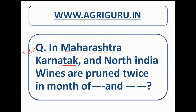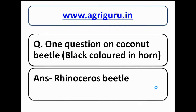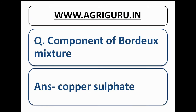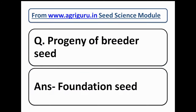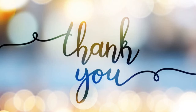Question number 53: in Maharashtra, Karnataka, and North India, vines are pruned twice in certain months — we don't have the full question or correct options; comment below if you know. Question number 54 is about the coconut beetle with a black horn — the answer is the rhinoceros beetle. Question number 55: a component of Bordeaux mixture — the answer is copper sulphate. Question number 56: a poultry house with 14 cm x 16 cm spaced restricted boxes where birds can stand and sit comfortably is known as the battery method. Question number 58: the progeny of breeder seed is foundation seed. The last two questions are from the definitions of aquaponics and protoplast culture — we don't have proper questions and options; if you know, comment below.